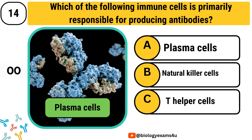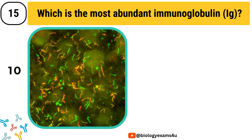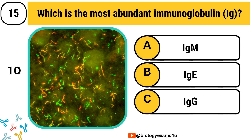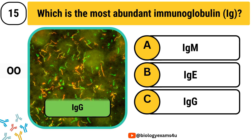Question number 15. Which is the most abundant immunoglobulin? Option A, IgM. Option B, IgE. Option C, IgG. The correct answer is IgG.